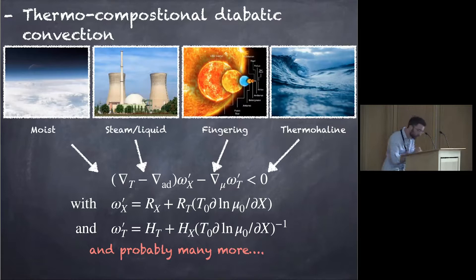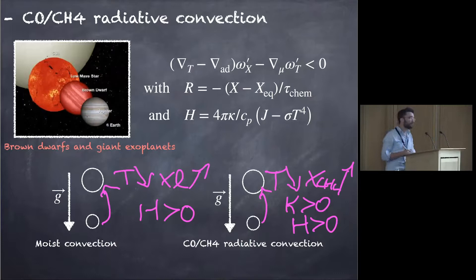With moist convection, when a bubble goes up, the temperature gets down. You have the fraction of liquid that goes up and you can heat up your atmosphere. And you can read a bit of a similar picture for CO-CH4 radiative convection. You move it up, the temperature decrease.